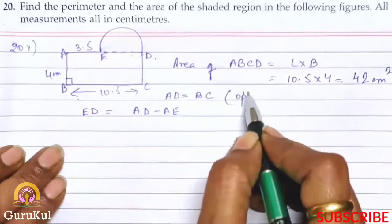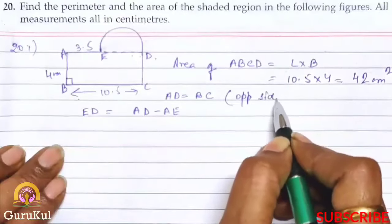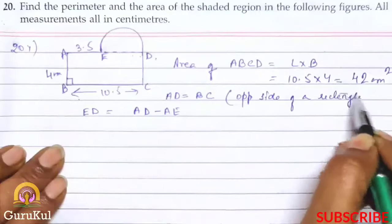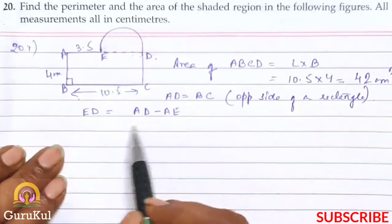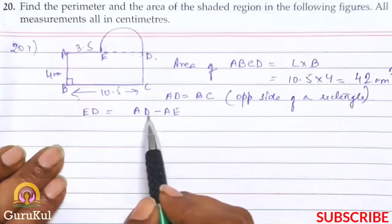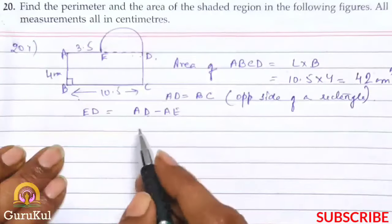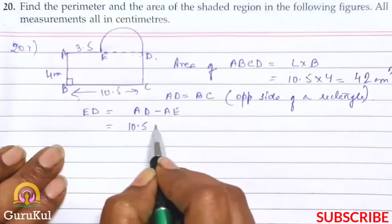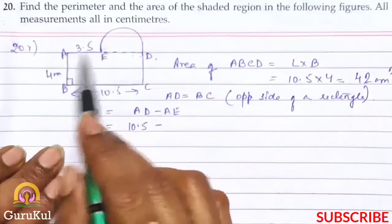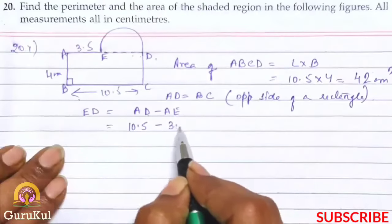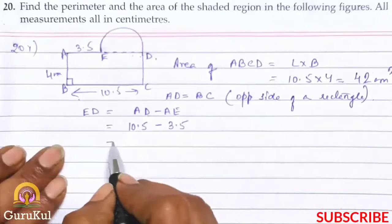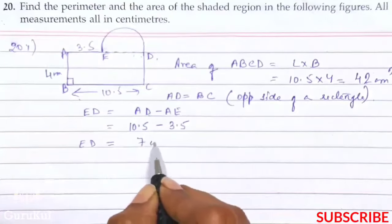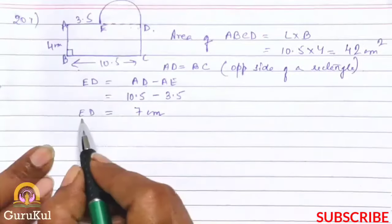The opposite side of a rectangle - AD is equal to BC, which length is 10.5 minus AE. AE is 3.5. Therefore ED's value is 7 cm.